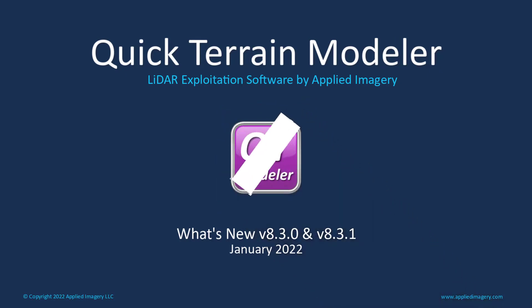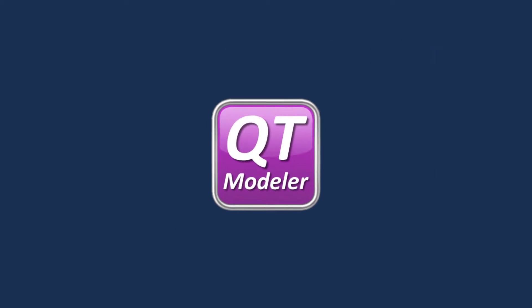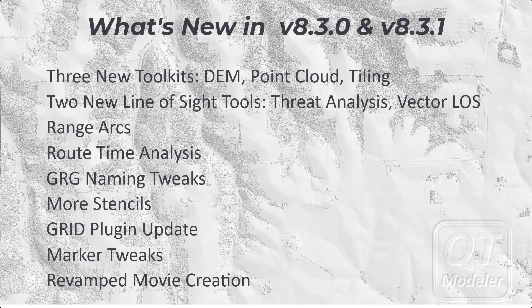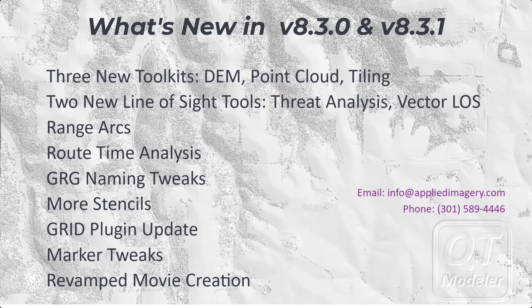Hello and welcome to the Quick Terrain Modeler version 8.30 and 8.31 what's new video. In this video we'll cover the top new tools introduced in both of these releases. The biggest news is the three new toolkits: the DEM toolkit, Point Cloud toolkit, and Tiling toolkit, and then we'll cover some of the bigger new tools. If you want the complete release notes, please contact Applied Imagery and we'll send those to you by email.